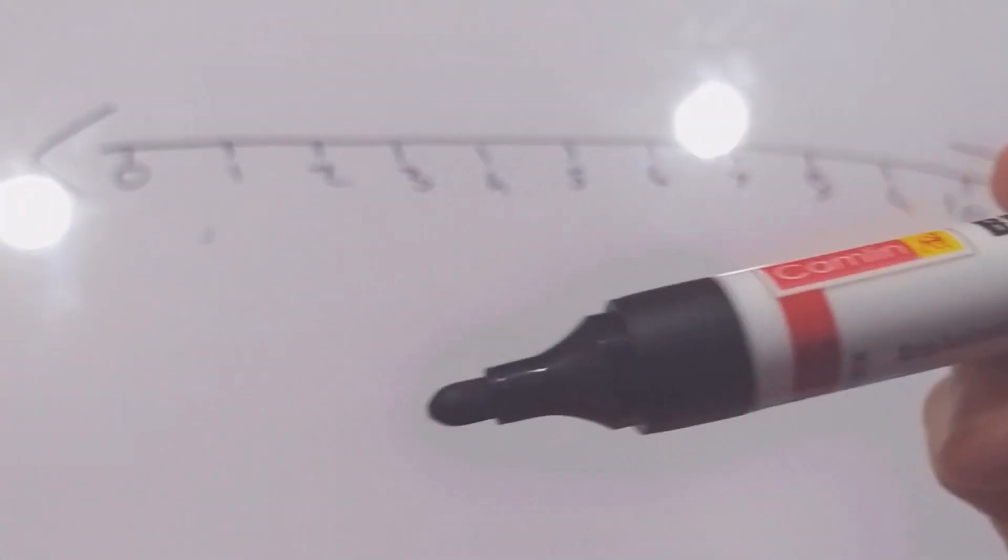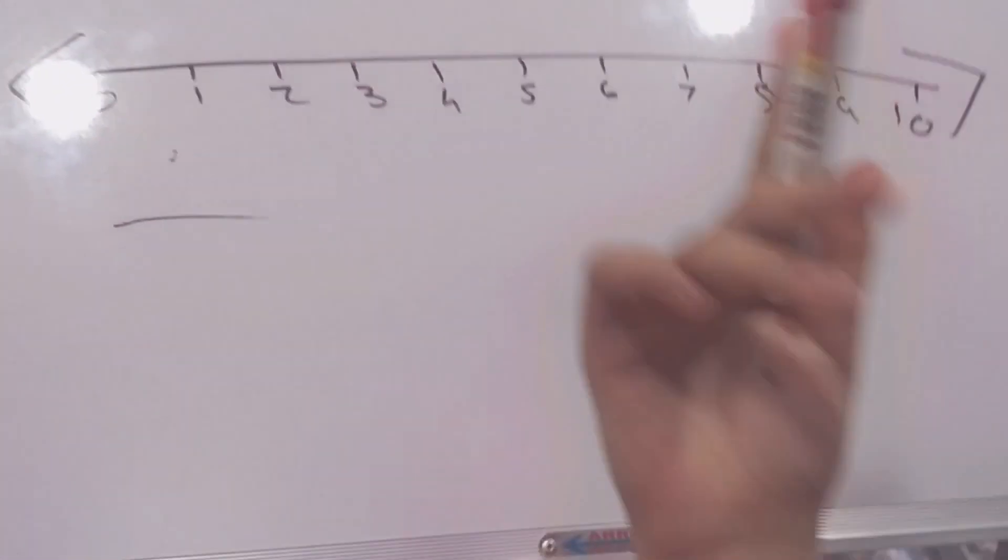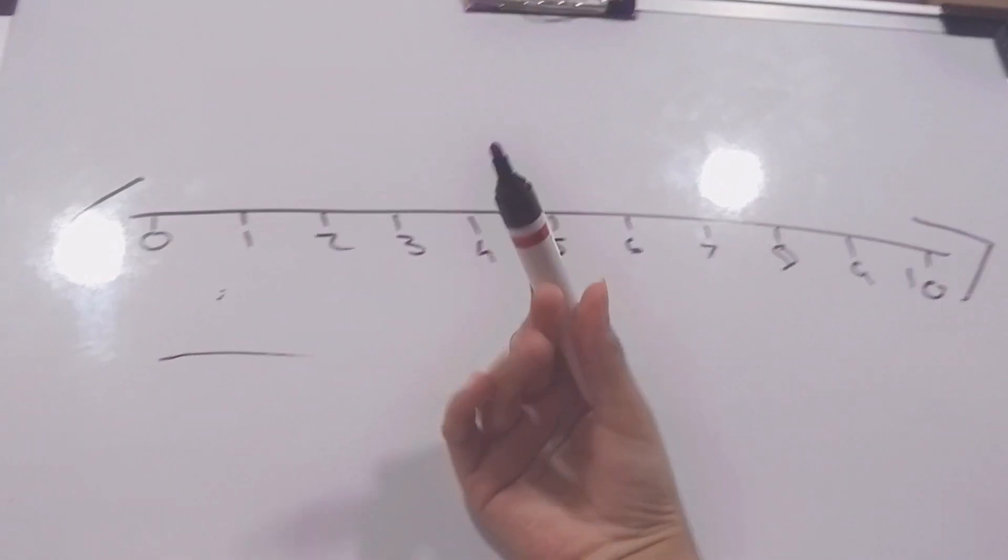Next, you always have to draw your number line with a pencil. I'm drawing with a board marker because I'm drawing it on a white board. So that's why. Otherwise you have to draw with a pencil. And yes,